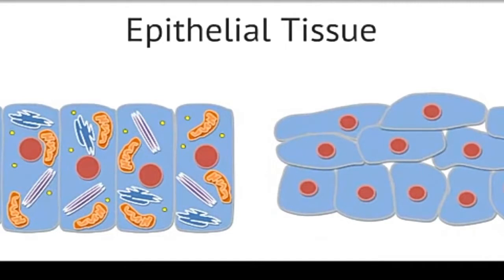Epithelial tissue is distinct from connective tissue because epithelial tissues have dense populations of cells directly connected to each other. Epithelial cells will always be connected to neighboring cells using cell junctions. These epithelial tissues, also called epithelium, are made up of sheets of cells directly connected to each other.